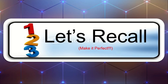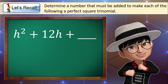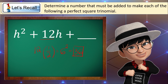Aside from converting a perfect square trinomial to a square binomial, let us also recall how to make a polynomial a perfect square trinomial. For example: what number must be added to h squared plus 12h to make it a perfect square trinomial? We get the numerical coefficient of the second term, which is 12, multiply by one half to get 6, then square it: 6 squared equals 36. So we add positive 36.